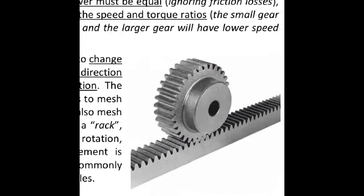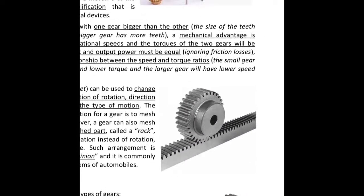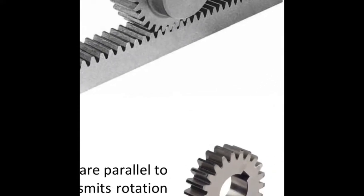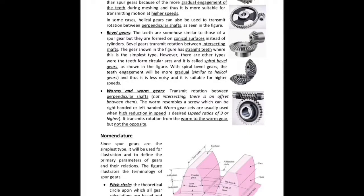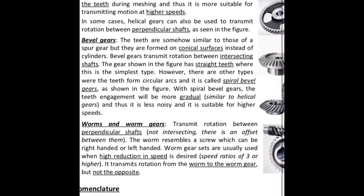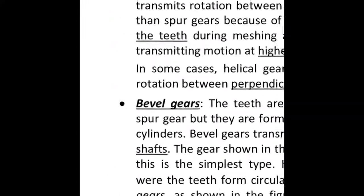Since the input and output power must be equal, ignoring friction losses, there is an inverse relationship between the speed and torque ratios. The small gear will have higher speed and lower torque, and the larger gear will have lower speed and higher torque.